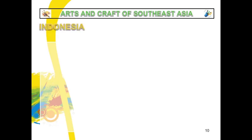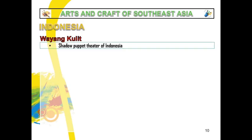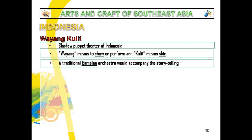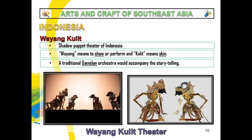Now let's go to Indonesia. Wayang kulit is the shadow puppet theater of Indonesia. Wayang means to show or perform, and kulit means skin. A traditional gamelan orchestra accompanies the storytelling. For this quarter, you just need to focus on the puppet itself — notice the arts of the puppet being used.